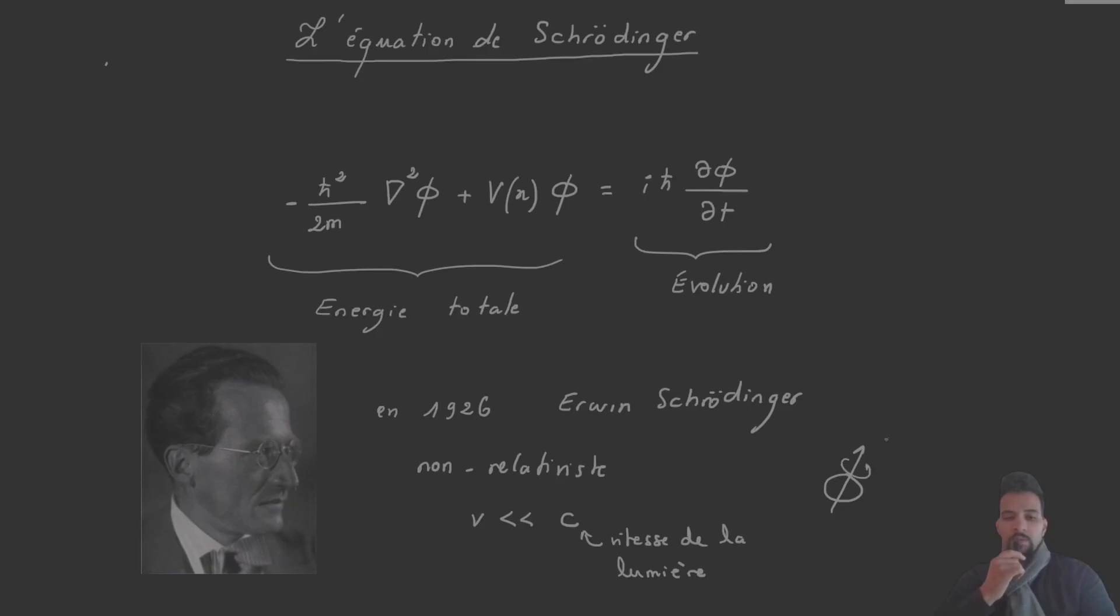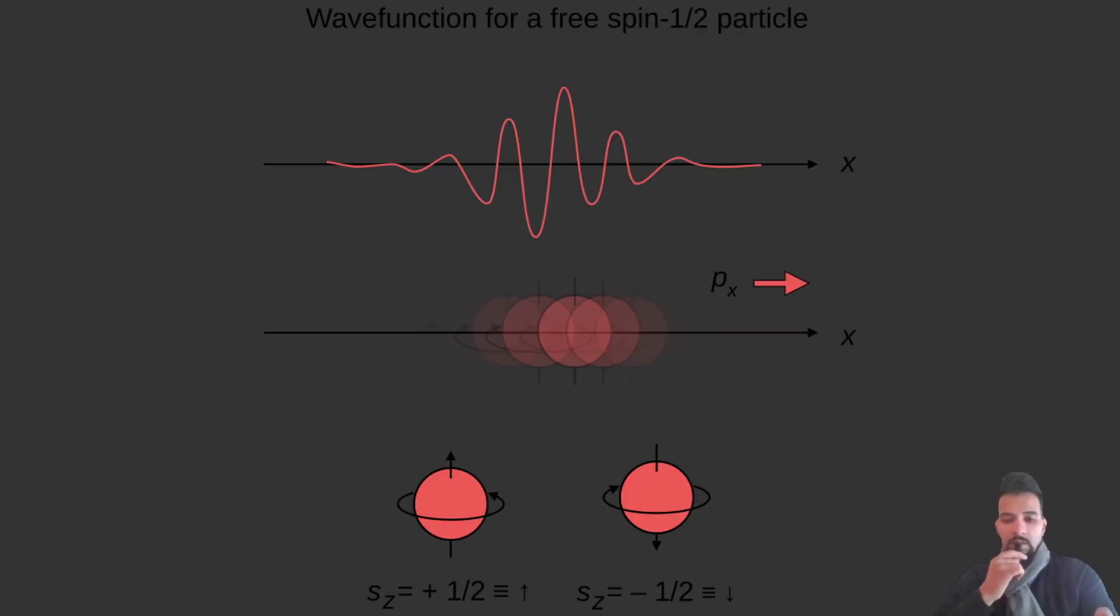Moreover, the classical Schrödinger equation does not take into account spin, an intrinsic property of particles. This spin is an intrinsic quantum angular momentum inherent to particles. This spin reflects the wave nature of particles and their interaction with magnetic fields.